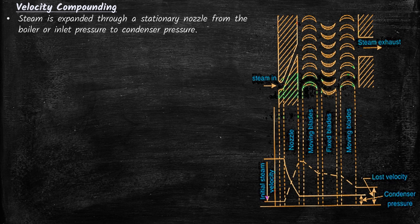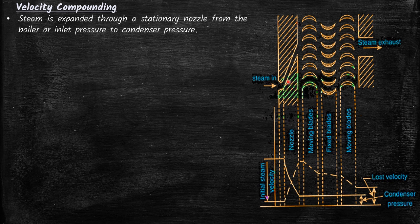In velocity compounding, a stage contains the following components: a fixed nozzle, then a moving blade, then a fixed blade, and again a row of moving blades. Steam is expanded through a stationary nozzle from the boiler pressure to the condenser pressure. The steam comes from the boiler and enters the nozzle, and after the kinetic energy transfer is done, it goes through to the condenser.